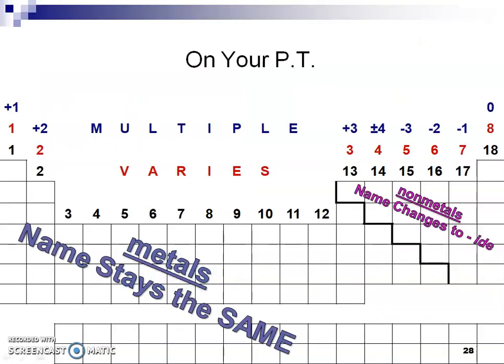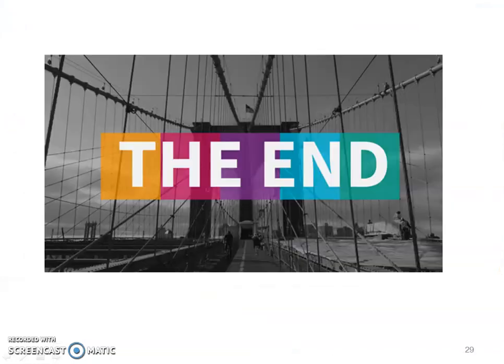This is what your periodic table should look like in the back. You might want to add a note: metals stay the same name, and non-metals change to -ide — just as a reference. We will see you in class.